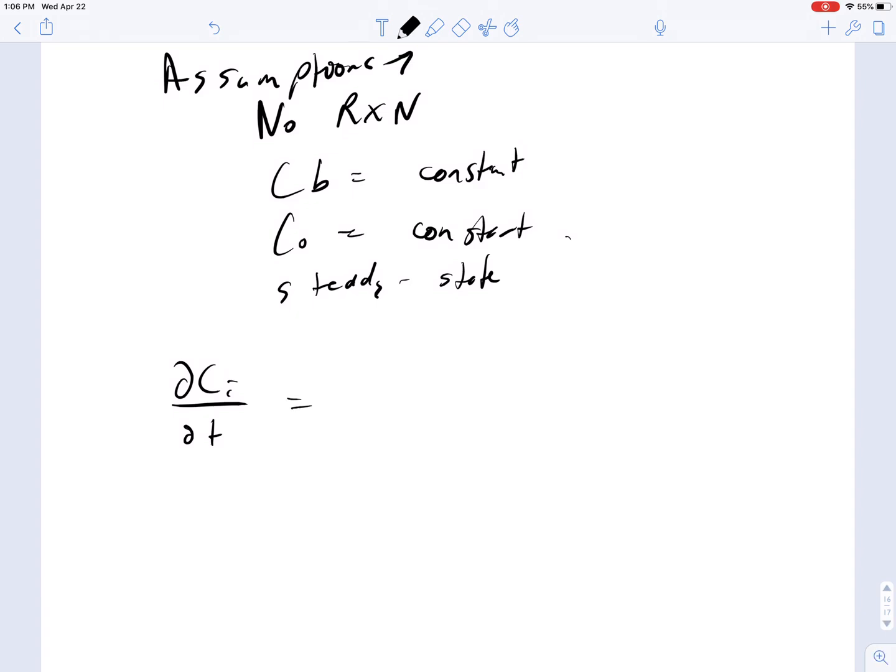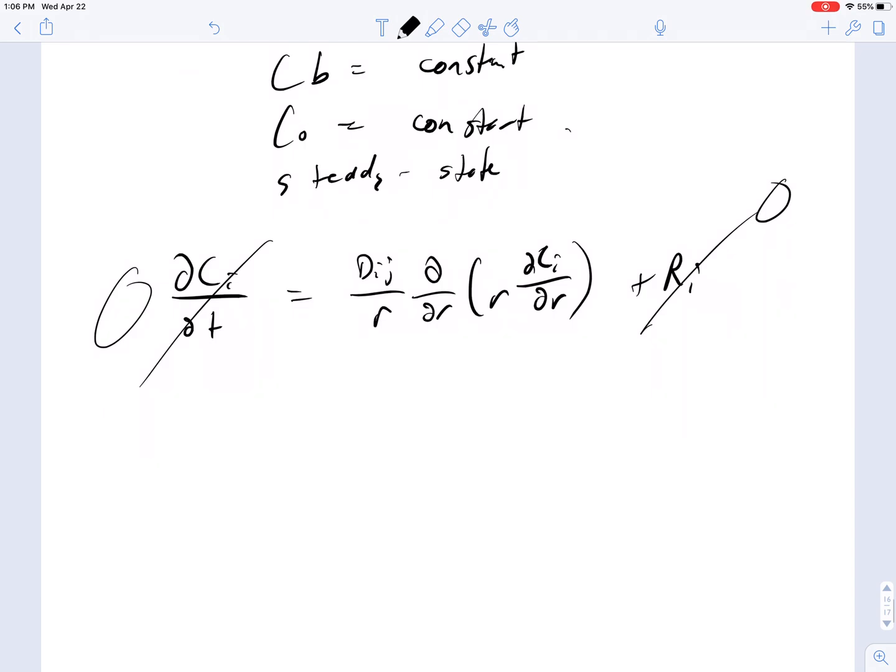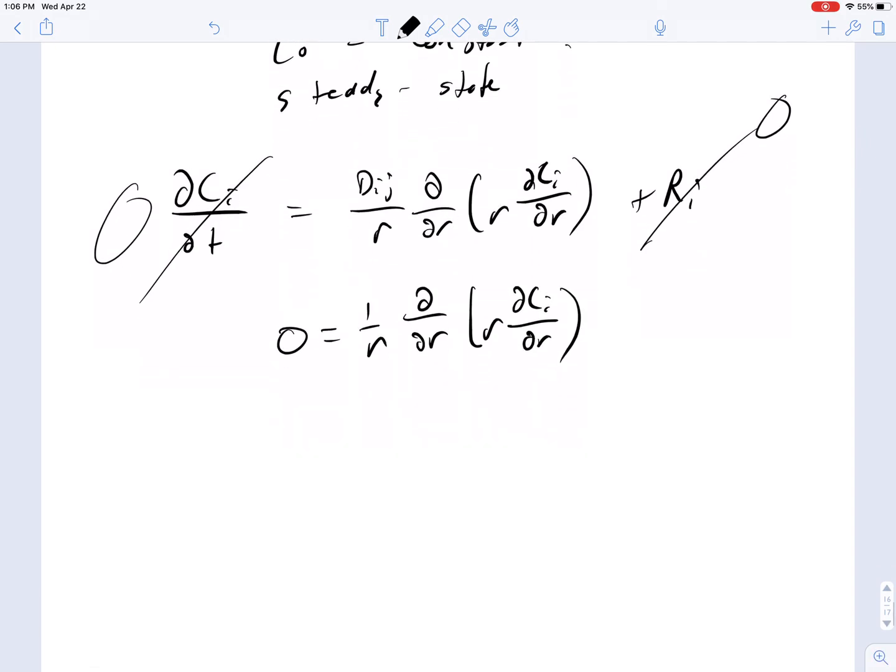So let's start by writing down our full equation that we're going to begin and solve. ∂C_I/∂t = D_IJ over little r, ∂/∂R(R∂C_I/∂R) plus R_I. Steady state, zero. No reactions, zero. So our new equation, we can divide through by the D_IJ, is simply 1/R ∂/∂R of R∂C_I/∂R.